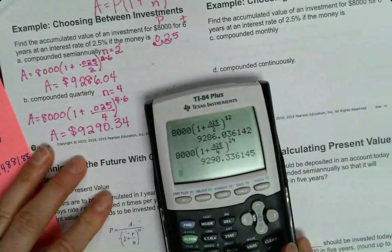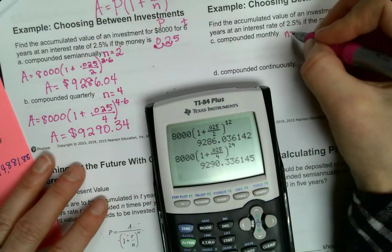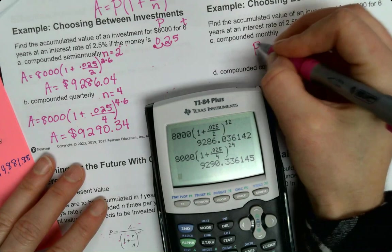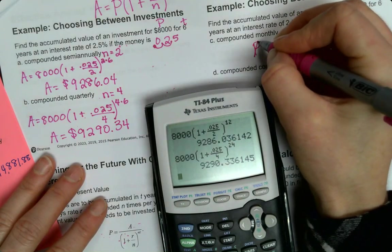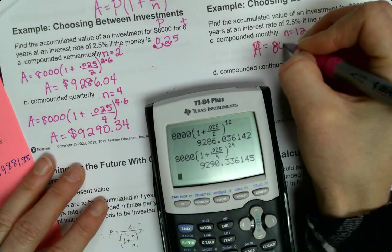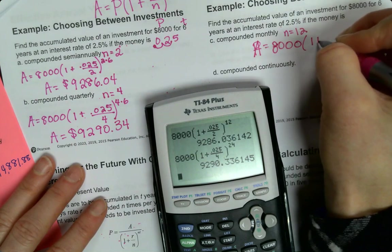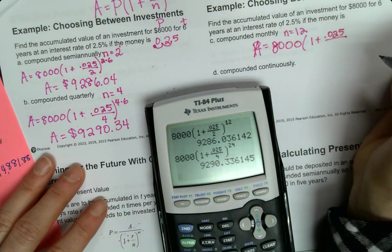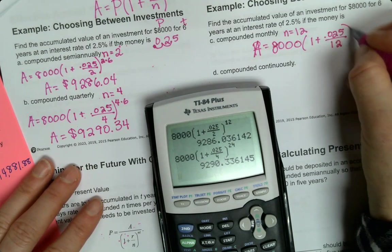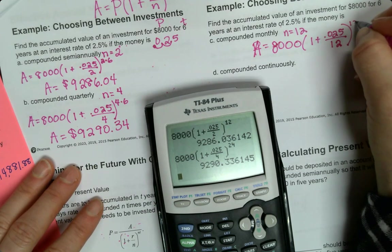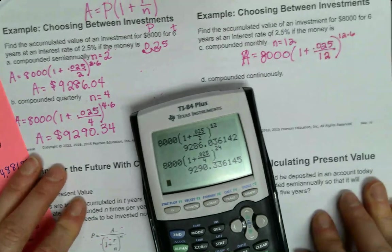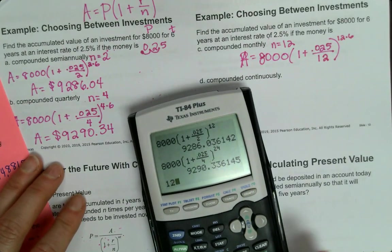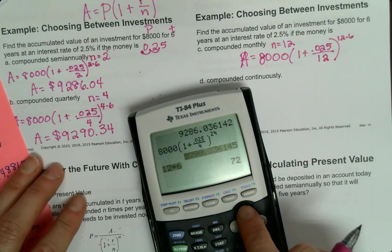I'm going to go up here where it's helpful that I can just change this to 4. Four times six is 24. So it did go up not much, almost four bucks. Next one compounded monthly so n is 12.